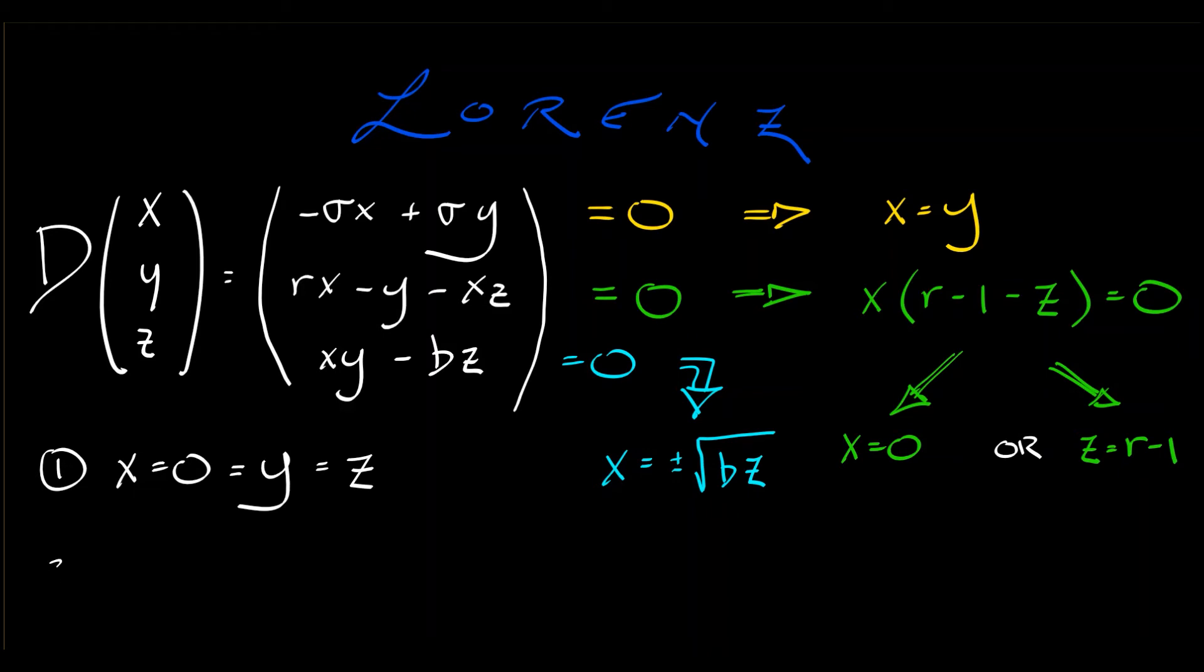The second possibility, a little bit more interesting, is when z equals r minus 1, and in that case, we can use the third equation to solve for x and for y, given by plus or minus square root of b times quantity r minus 1.